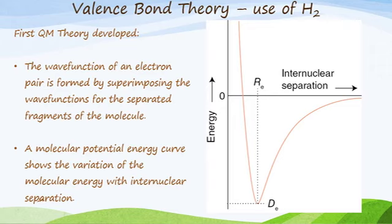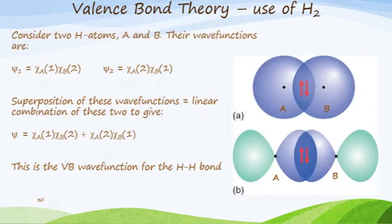Bringing two atoms together gives us a molecular potential energy diagram, shown on the right hand side of the slide. As we bring the two atoms closer together, there becomes a critical distance where we can no longer bring them together anymore before the energy shoots up dramatically. The molecular potential energy curve shows the variation of energy with internuclear separation.